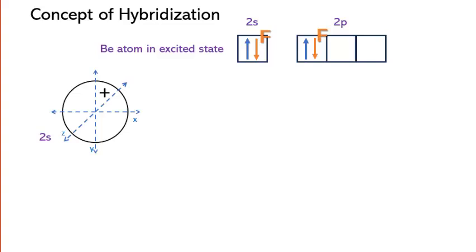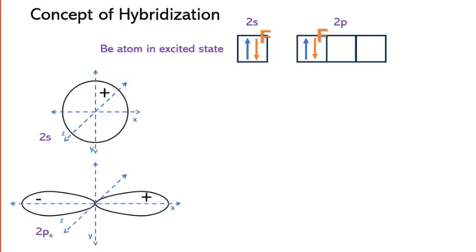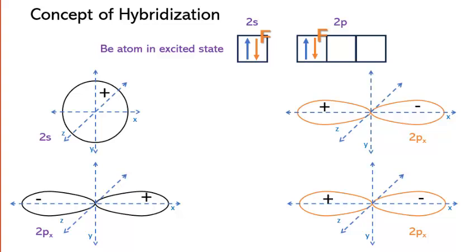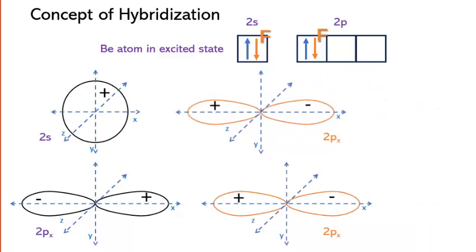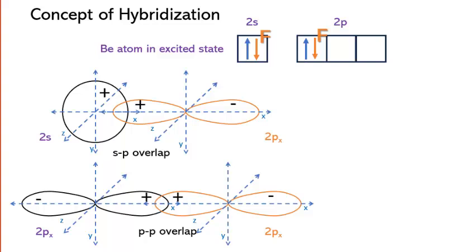Let us visualize this direct overlap scenario. Imagine if the 2s and 2px orbitals of beryllium directly overlapped with the 2px orbital of fluorine. If we consider axial overlap conditions, then we see an sp overlap and pp overlap. The bond formed from the overlap of the 2s orbital with fluorine's 2px orbital would have a different length and energy compared to the bond formed from the 2px orbital of beryllium overlapping with fluorine's 2px orbital. This would result in a molecule with non-equivalent bonds, leading to instability and inconsistency in bond properties.